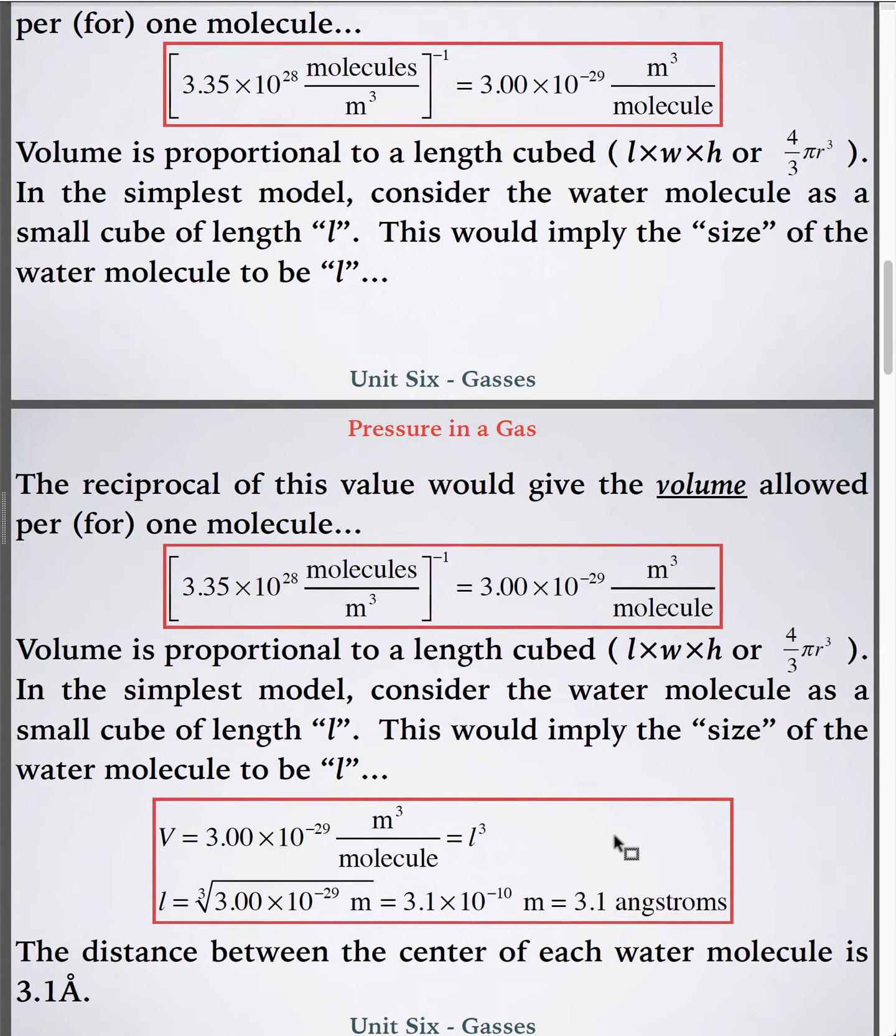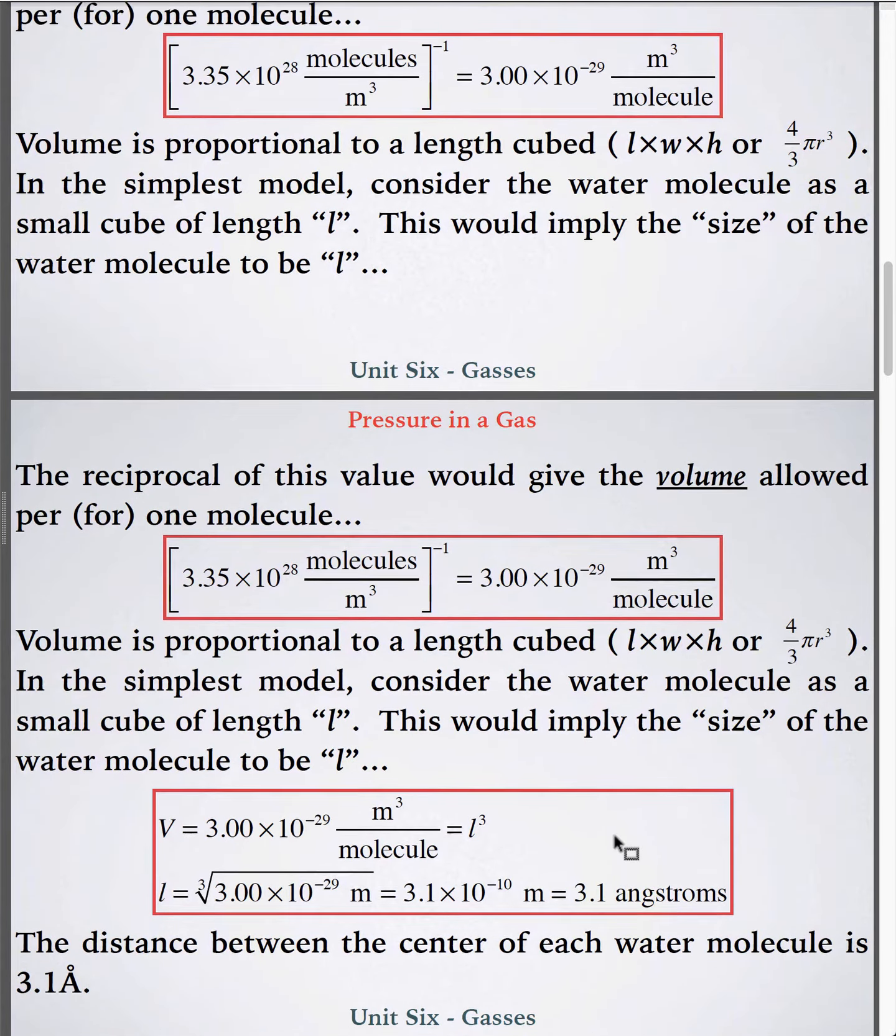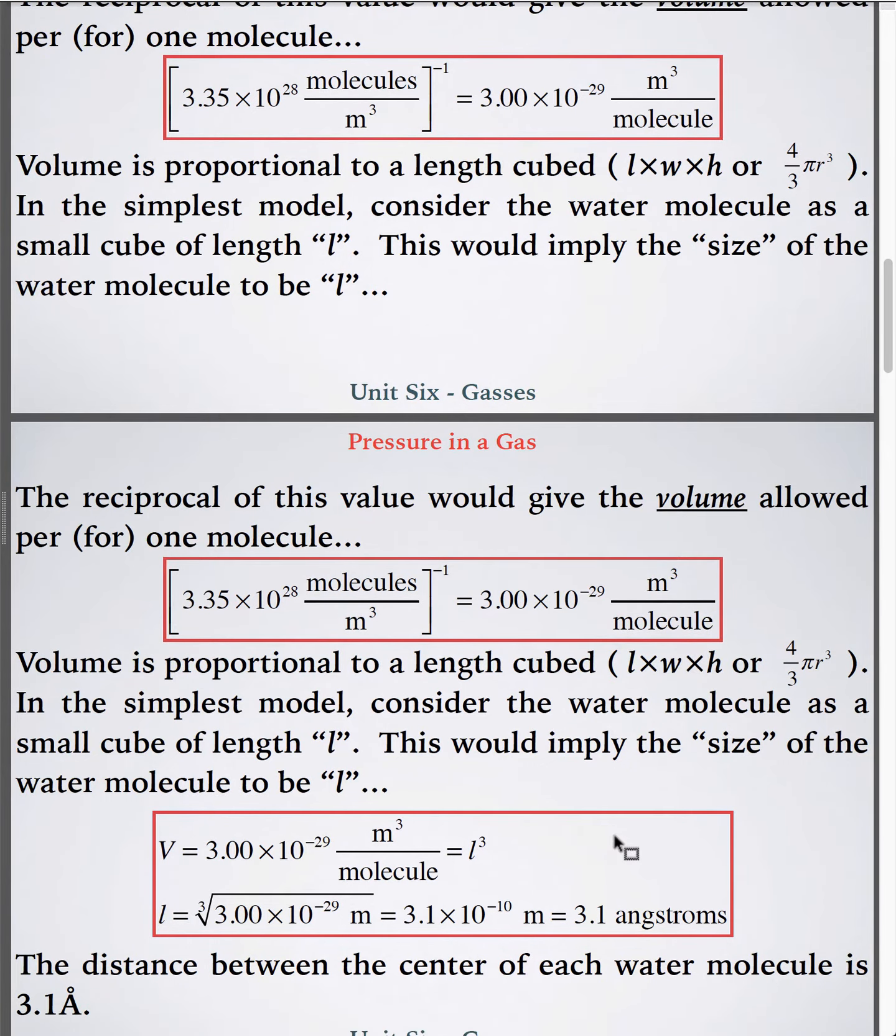Assuming those are all about the same, about the same for all, for most practical purposes, at least two sig figs. The volume then would be length times length times length, being all about the same. Take the cube root of both sides and you find the length of a water molecule to be about 3.1 times 10 to the minus 10 meters or about 3.1 angstroms.